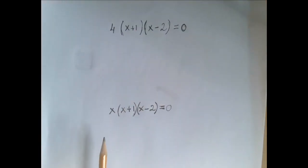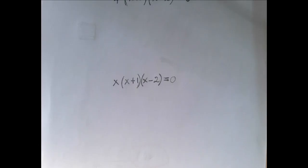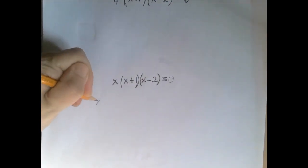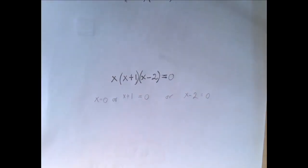Let's start with this second one. We have three factors. The product is zero. The only possible way is if at least one of the factors is zero. Once a factor is zero, the values of all other factors are irrelevant. So either x equals zero, or x plus 1 equals zero, or x minus 2 equals zero.